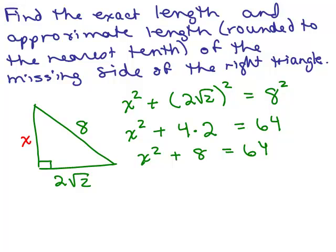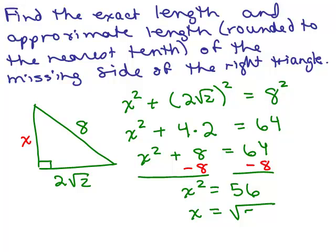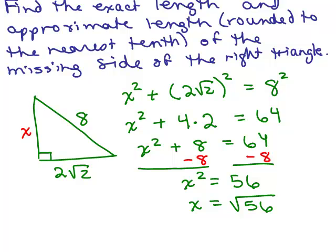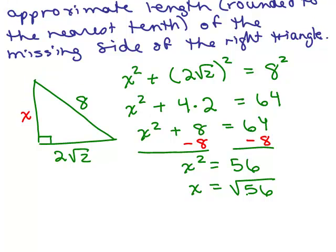So we have X squared plus 8 equals 64. And now we can subtract 8 from both sides. And that gives us X squared equals 56. Now, I need to take the square root of 56.